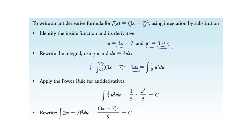So we'd have (3x minus 7) squared times 3 dx. This gets replaced with du, and this gets replaced with u squared, with our one third out in front. Then we just have one third times u squared du, which is u to the third over 3 plus c, still times that one third. Now we get rid of u and substitute back: one third times one third gives a nine on the bottom, and 3x minus 7 to the third on top. That's our answer.